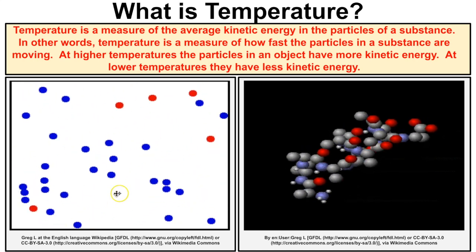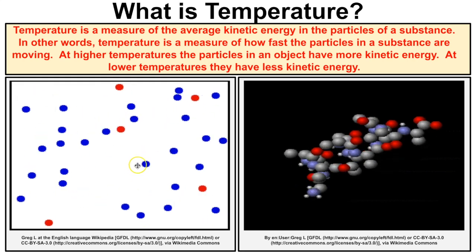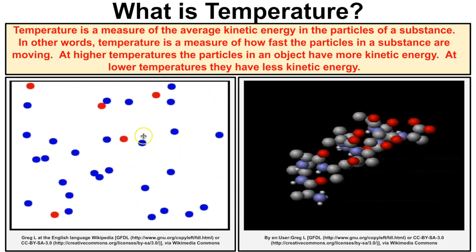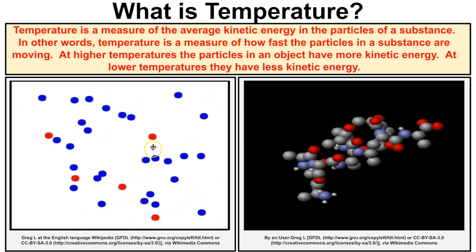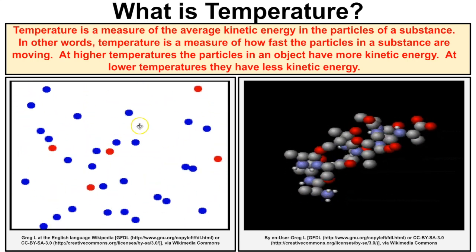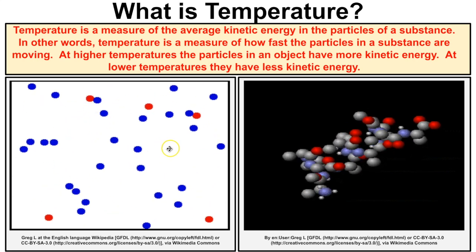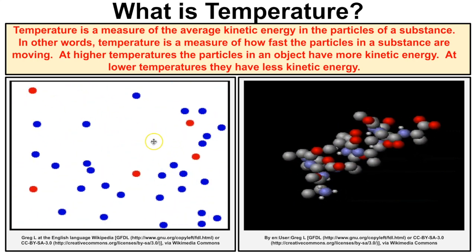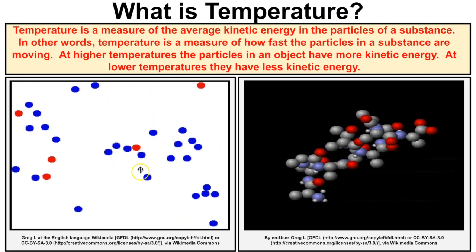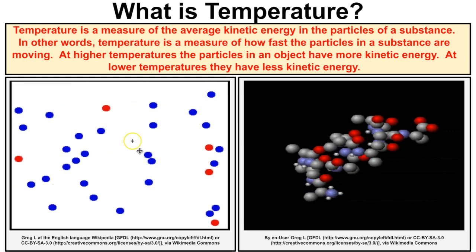If we take a look at this graphic, we can see some particles in motion — let's suppose these are gas particles. As we increase the temperature of the gas, these particles are going to start moving faster and faster and therefore have more kinetic energy. If we cool this gas down to a lower temperature, these gas particles are going to start to slow down and have less kinetic energy.